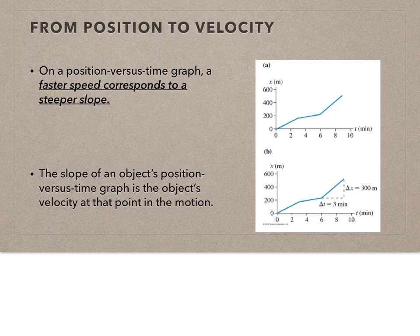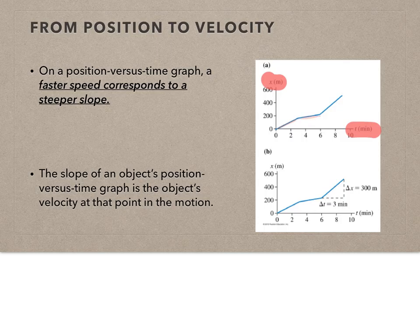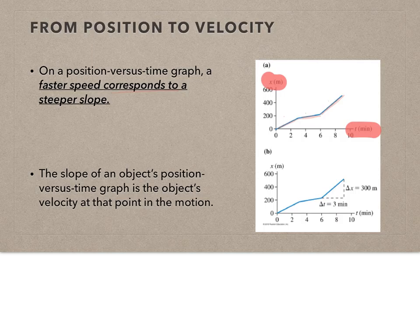On a position versus time graph — and the first thing you need to look at is what type of graph it is — the faster speed corresponds to a steeper slope, a higher rate of change in position. Looking at the data from before: the first segment has a medium slope, the second segment has a lower slope — a lower slope corresponds to a slower speed — and then the slope gets higher again, meaning a faster speed. So that gives us medium, slow, and fast just by looking at the slopes.